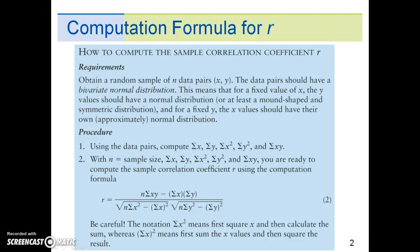Obtain a random sample of n data pairs (x, y). The data pairs should have a bivariate normal distribution. This means that for a fixed value of x, the y value should have a normal distribution, or at least a mound-shaped and symmetric distribution. And for a fixed y, the x values should have their own approximately normal distribution.